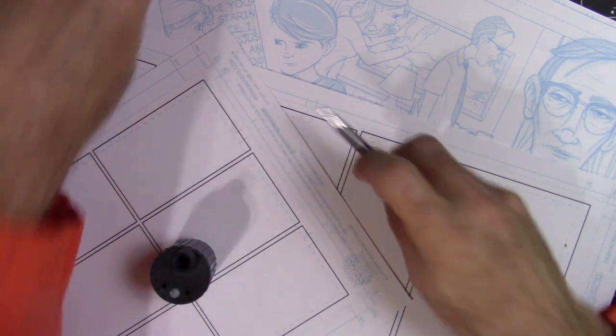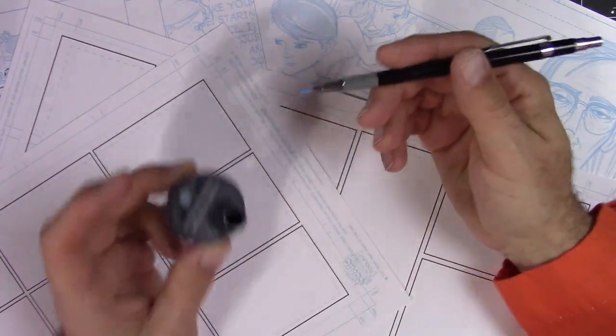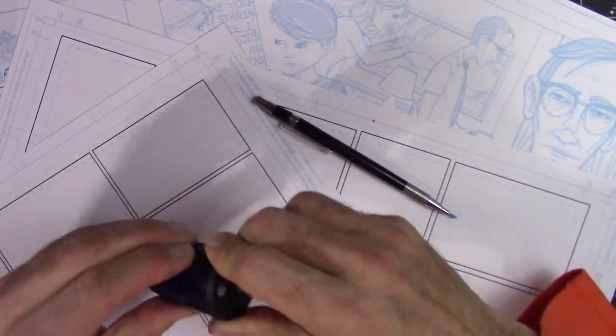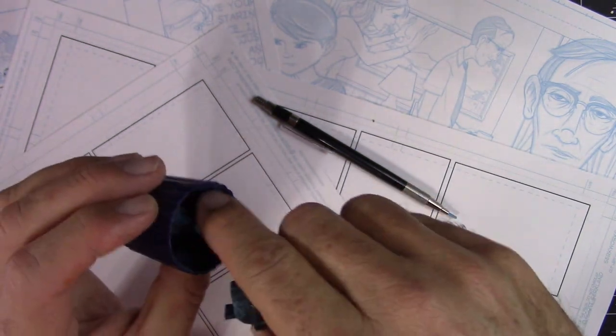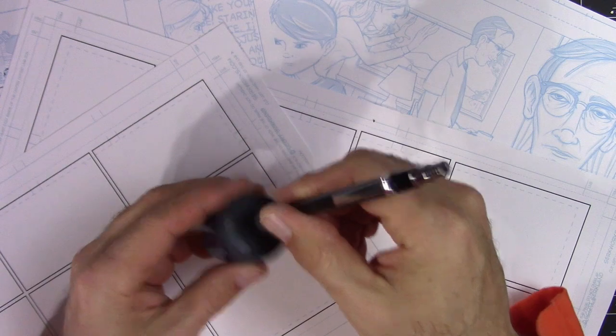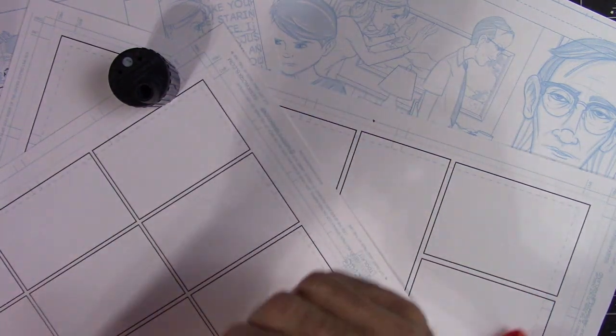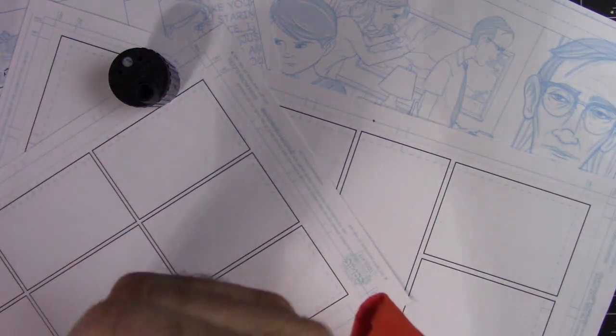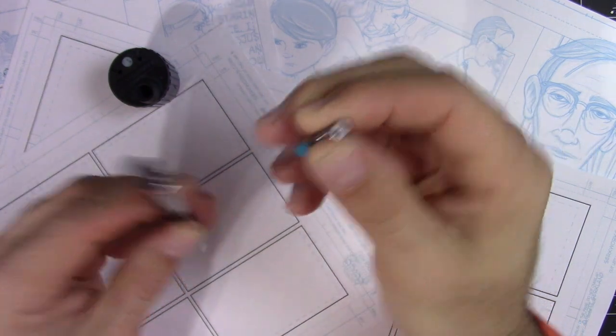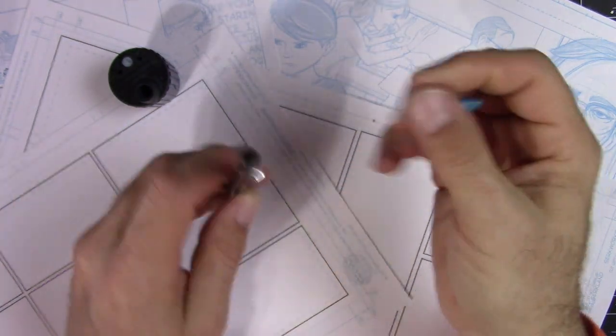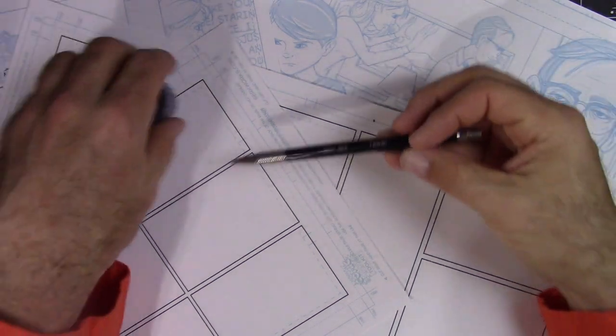This particular pencil has a special sharpener. You can't use any sharpener for this. I'll break this apart and show you. You see that? That's got a little grinding thing. This thing spins around. You put your pencil in here and spin around like that, and voila, you get your pencil sharpener.